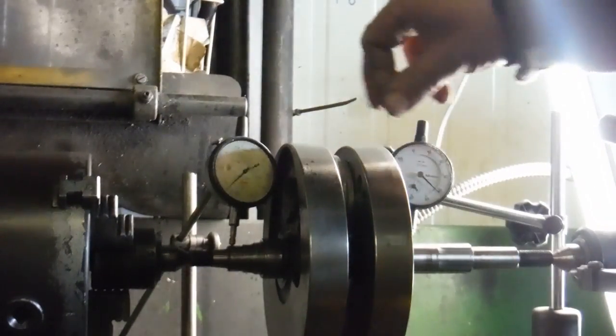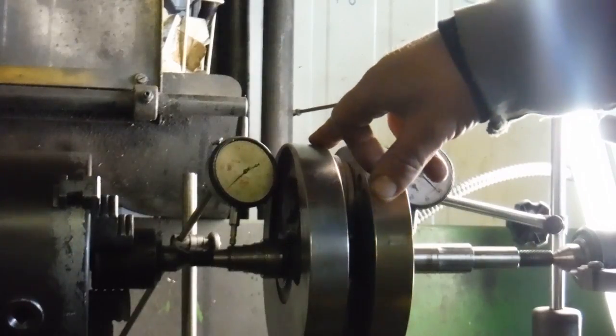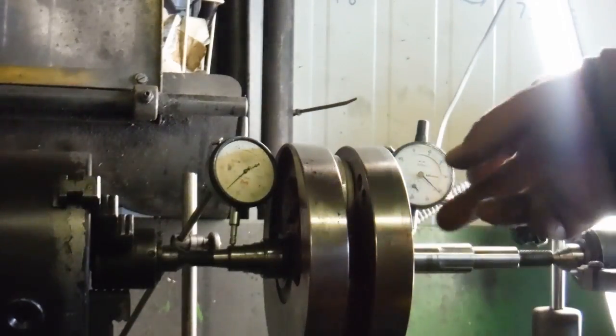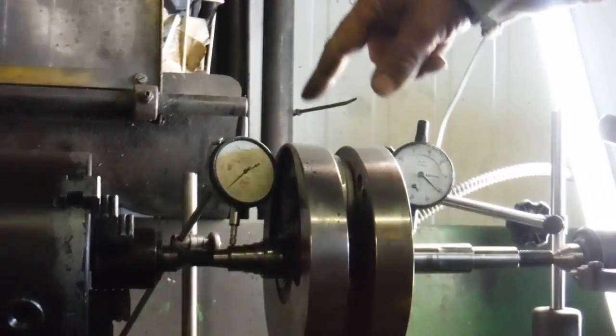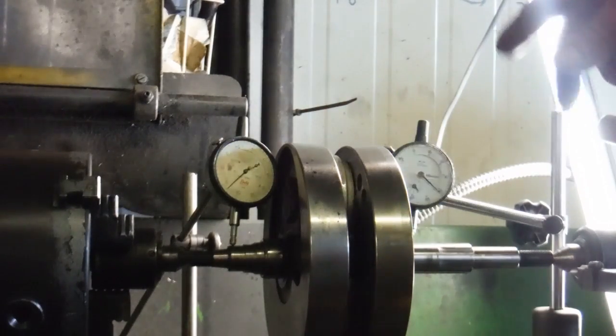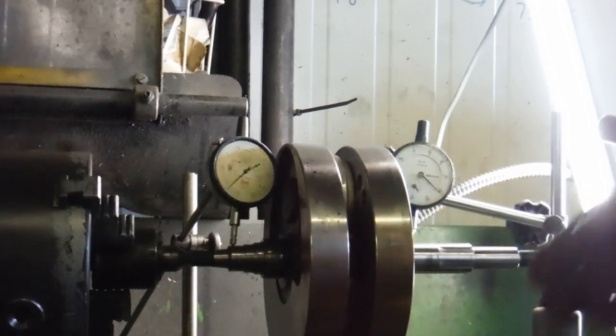This is a crankshaft as removed from a running 500 Indian Enfield. I just thought I'd make this video to show the sort of run-out you can get on them as they are inside an engine.